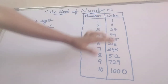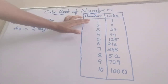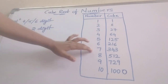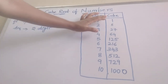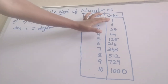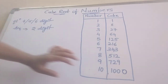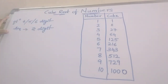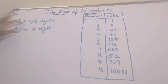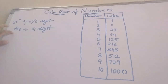First we can take a box here, writing the numbers and the cubes from 1 to 10. If the given question is a 4-digit, 5-digit, or 6-digit number, the answer should be in 2 digits only.